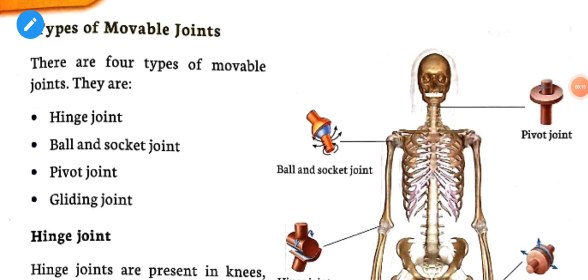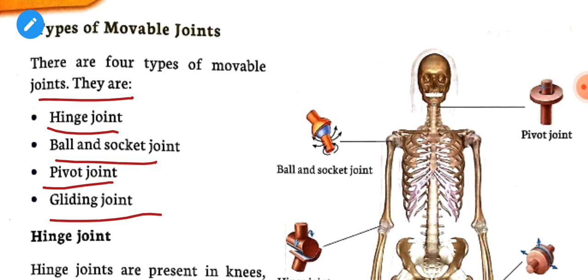Now let's know about types of movable joints. There are four types of movable joints: hinge joints, ball and socket joints, pivot joints, and gliding joints.